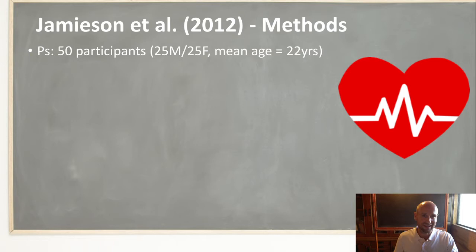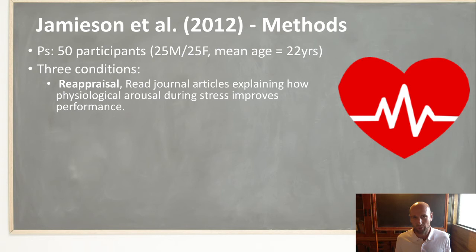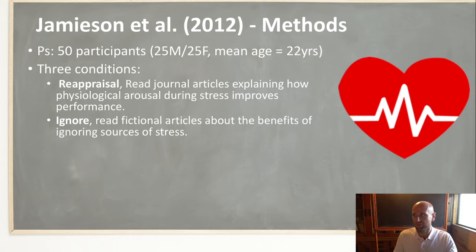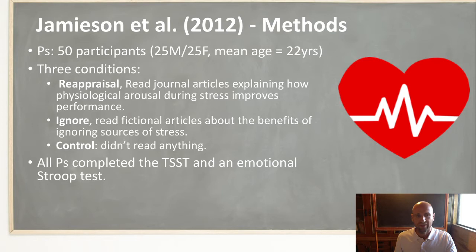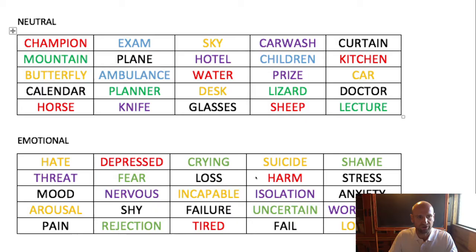Jameson and colleagues divided participants into three groups. In the reappraisal group, they were given information stating that stress is beneficial — that if you focus on your stress you can use it as a resource to help your performance. In the ignore condition, almost identical materials were given but tweaked to say that ignoring stress is better. This was fictional information with no evidence behind it. The control condition read nothing. Blood pressure and other cardiovascular measures were taken before and after the TSST, and participants also completed an emotional Stroop test.